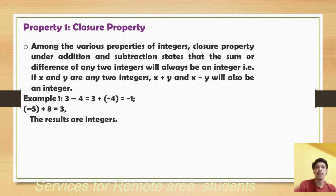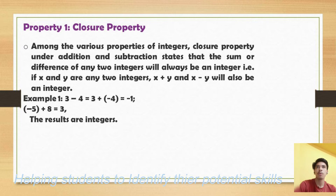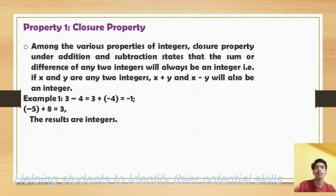First I will discuss about closure property. Closure property under addition and subtraction states that the sum or difference of any two integers will also be an integer. For example, taking 3 plus minus 4 equals minus 1, and 3 minus 4 equals minus 1 — both answers are integers.